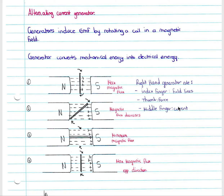We will cover specifically the alternating current generator, which forms part of the electromagnetic induction section of the physics syllabus. Firstly, we need to know that generators induce EMF by rotating a coil in a magnetic field.